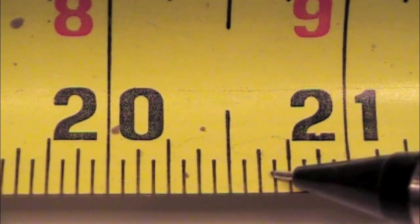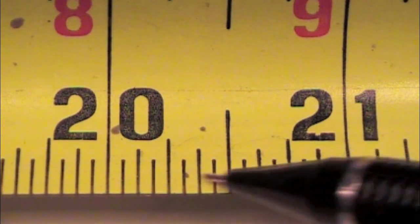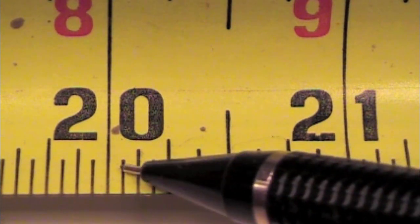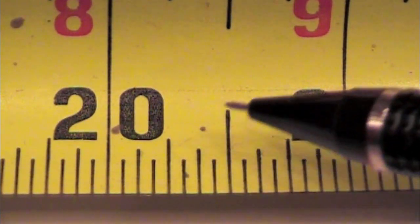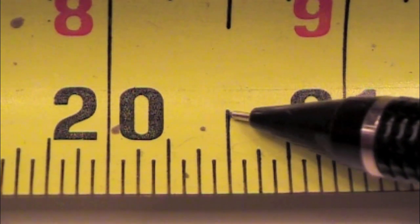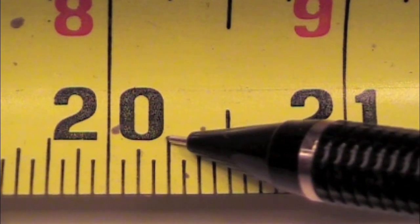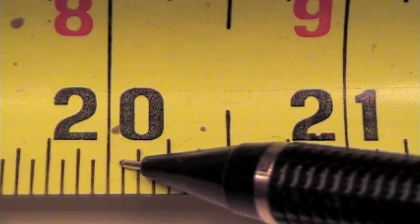So each one of these lines, each one of these spaces, is in sixteenth of an inch, at the shortest line. You'll notice that the largest line is half an inch, then quarter, then an eighth, then a sixteenth.